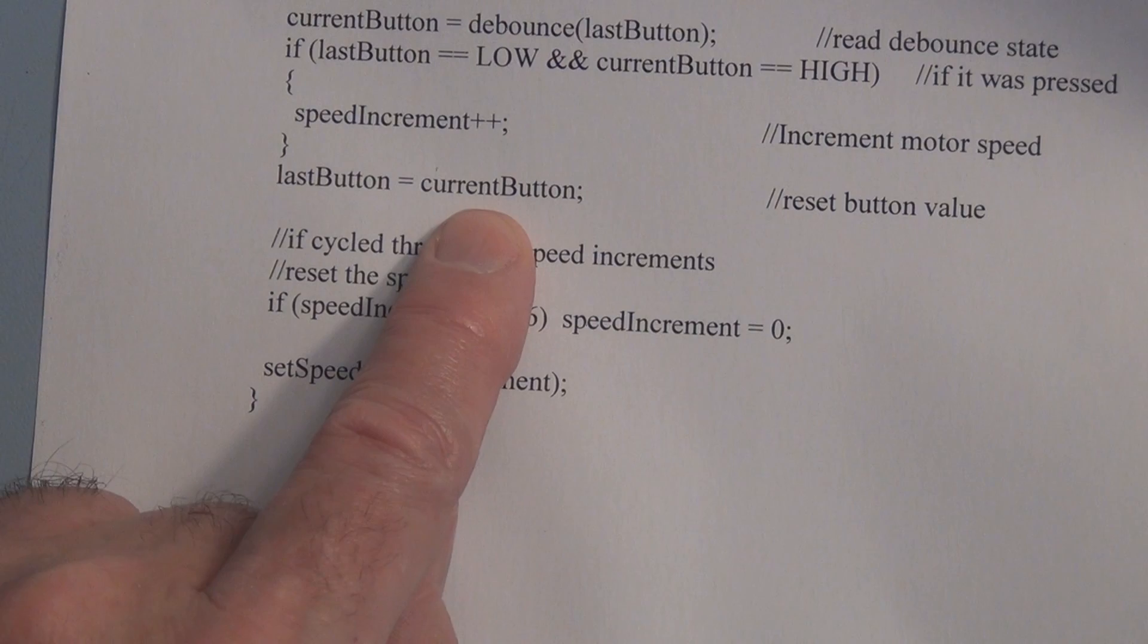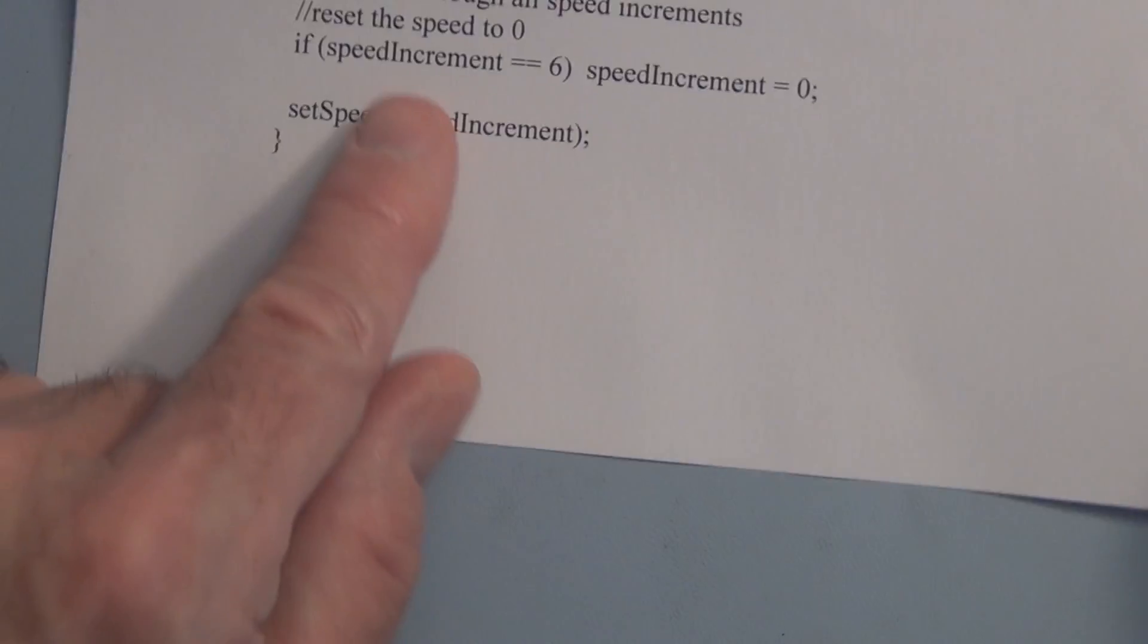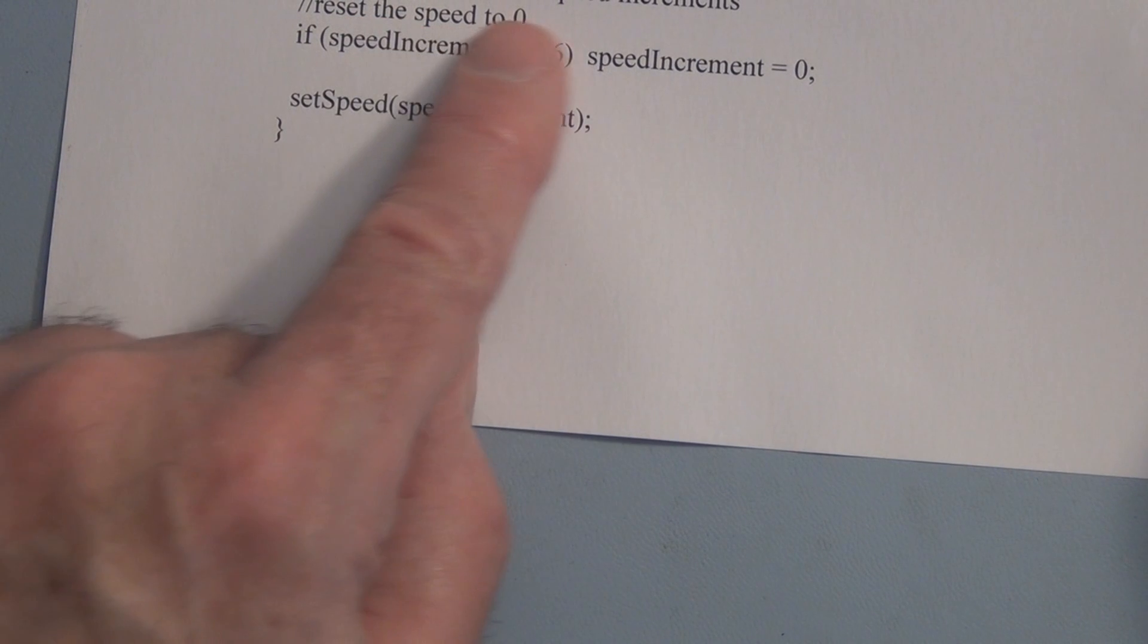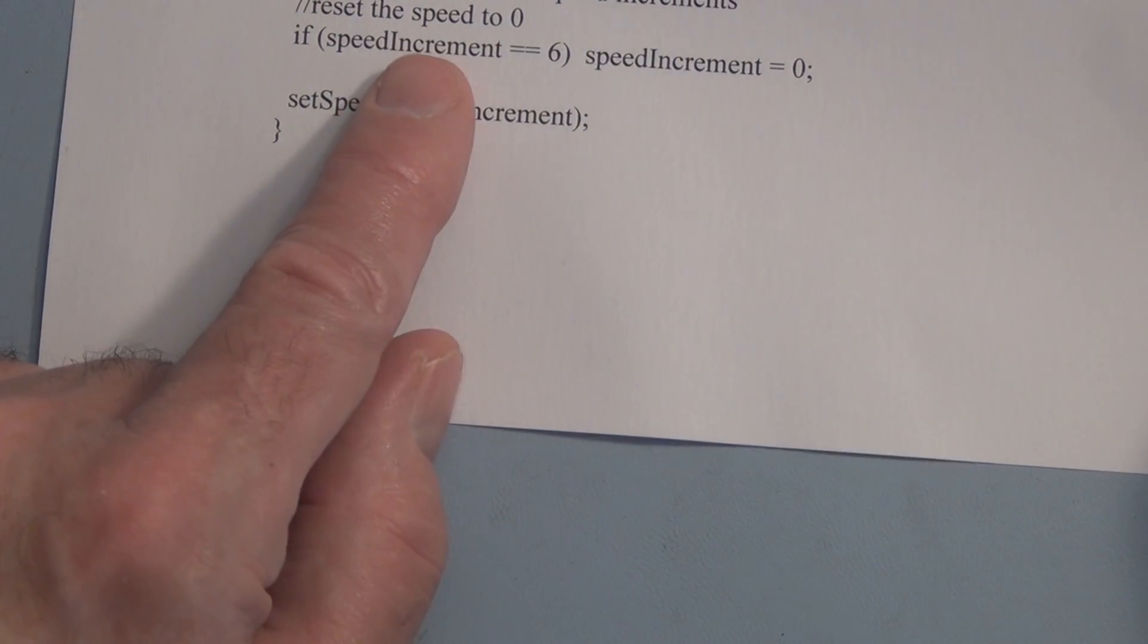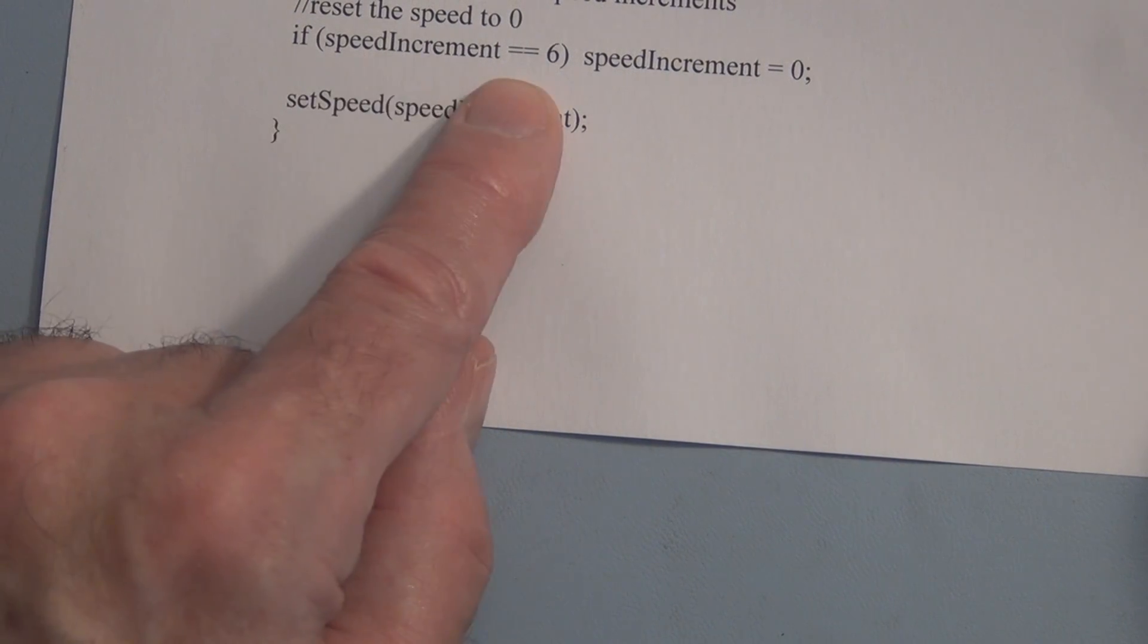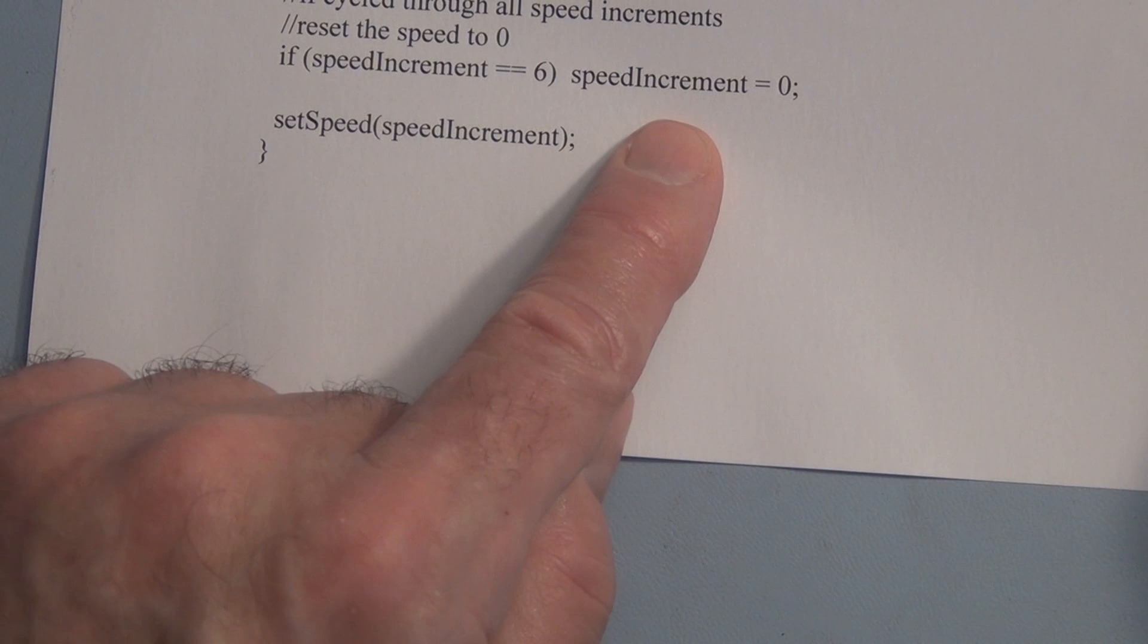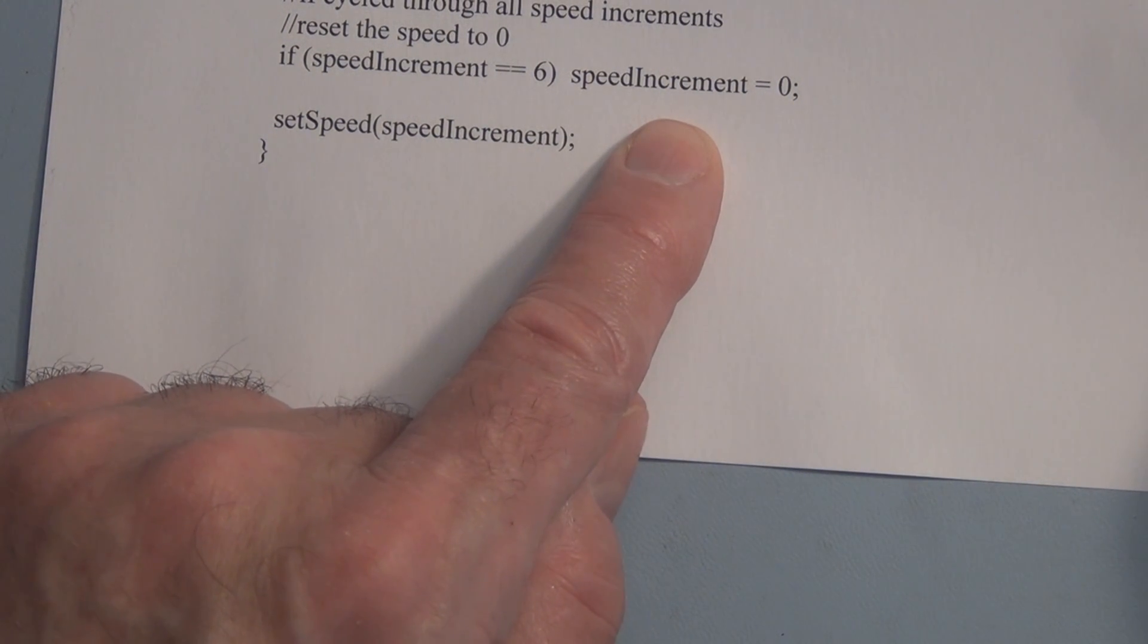And then again, the current button is reset to the last value. And here, if cycled through all speed increments, we're going to reset the speed again to zero. If speed increment is equal to six, speed increment to zero. So we're just making sure that the motor is reset to zero.